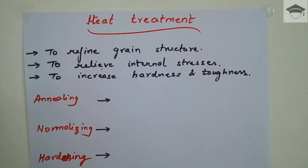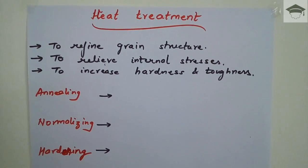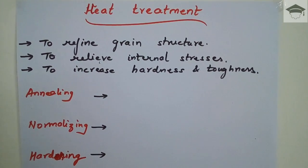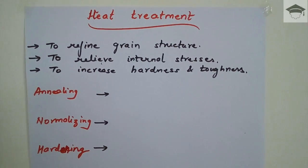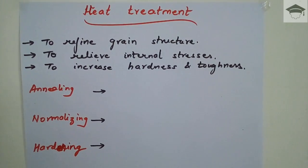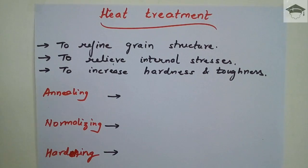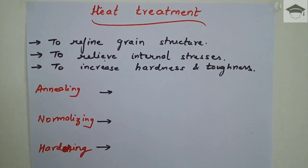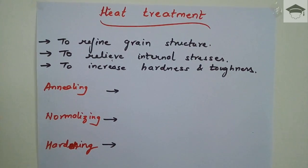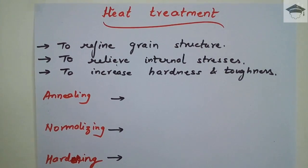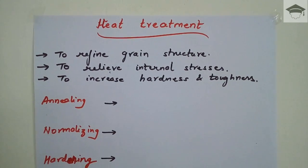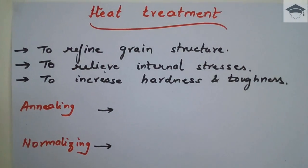Heat treatment is necessary because the initial forming processes — such as rolling or extrusion — cause internal stresses to develop in the components, and the grain structure becomes non-uniform. To address these issues, we apply heat treatment processes.